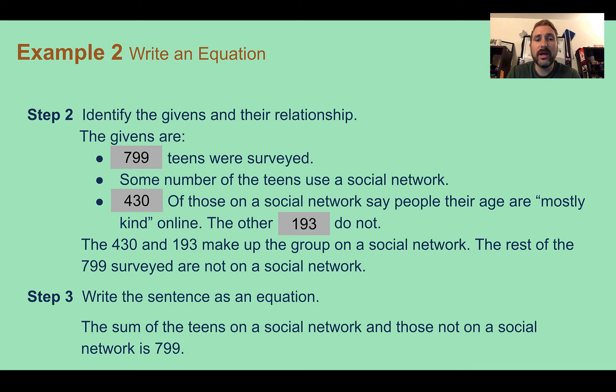So if we're writing out an equation, we know that adding the people who are on social networks and the people who are not is equal to 799. So we would add the 430 people who said kind.